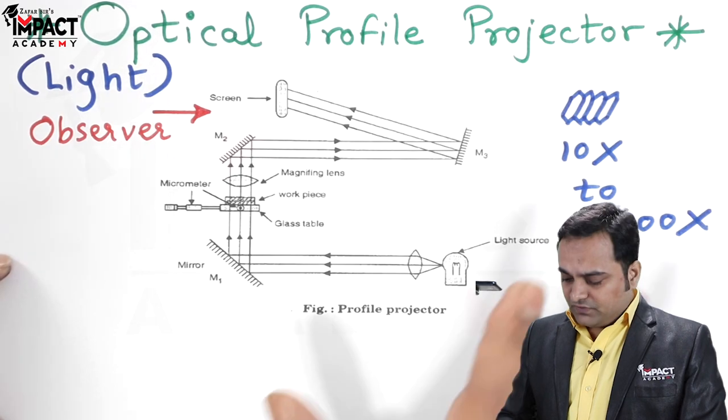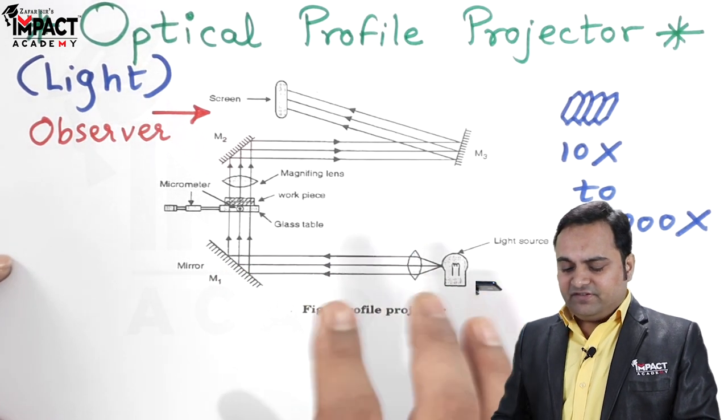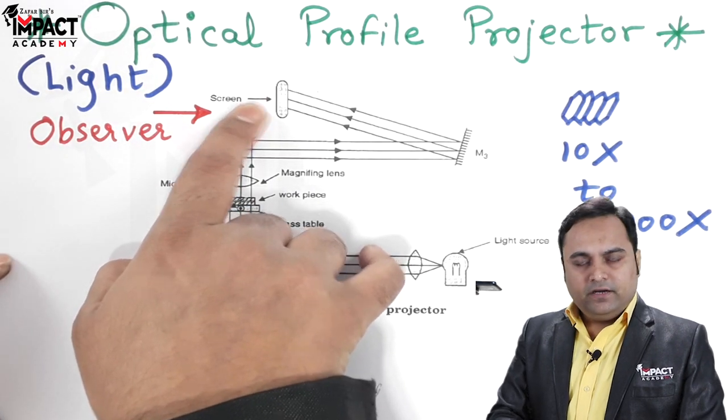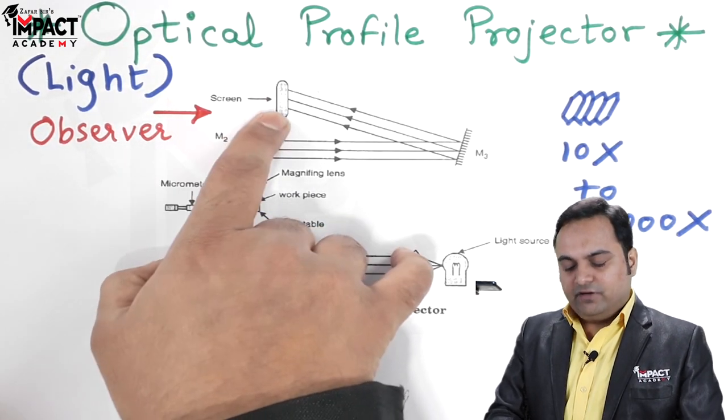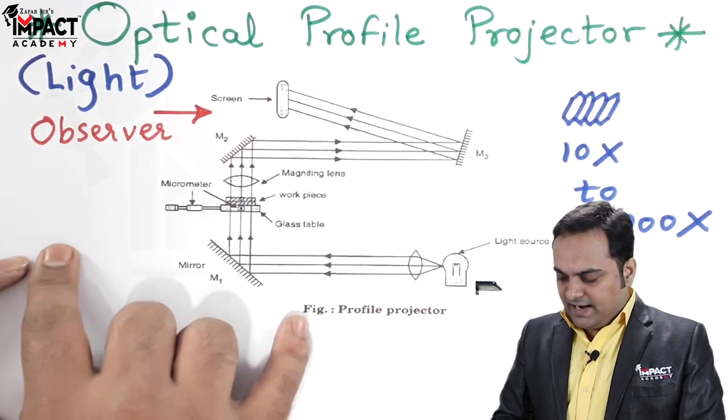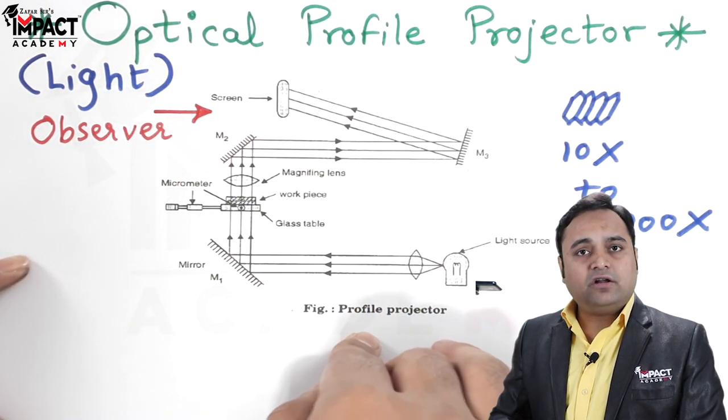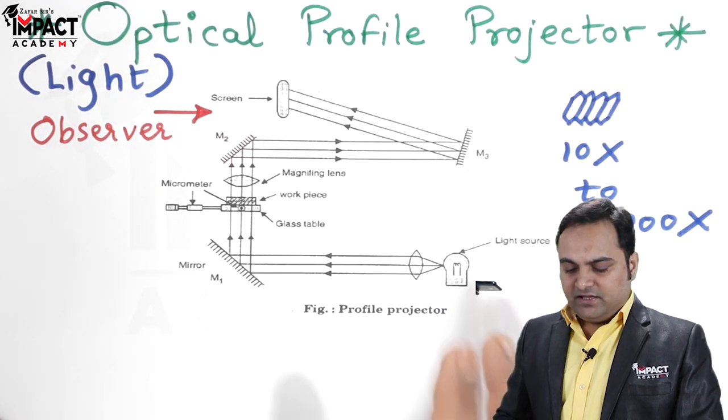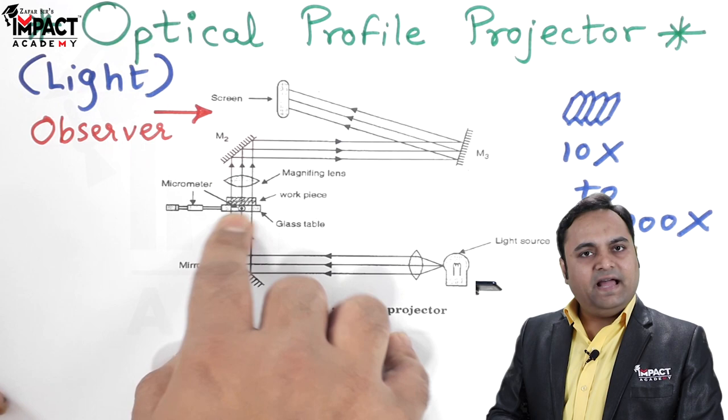The only disadvantage of such instruments is that the observer standing in front of the screen has to see the image properly. At the same time, such instruments are costly and delicate, so we have to take care. Otherwise, it is quite accurate when we compare it with other kinds of instruments.